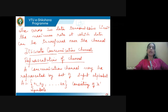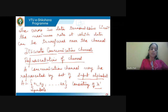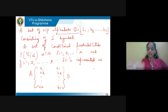A discrete communication channel is defined as one that accepts binary symbols as input and produces binary symbols at the output. A communication channel can be represented by a set of input alphabets — set A — with R symbols: A1, A2, up to AR. There is also a set of output alphabets — set B — with S symbols: B1, B2, up to BS.